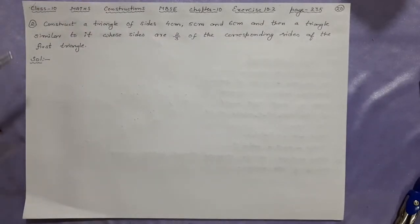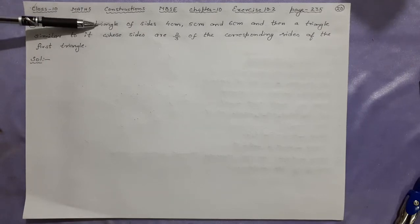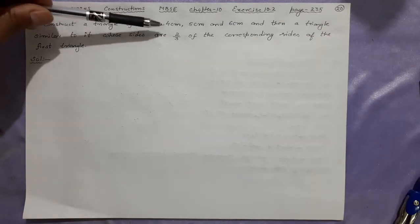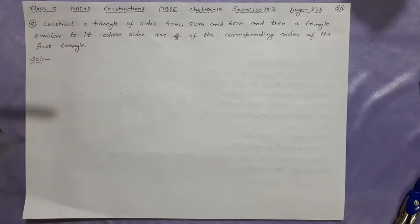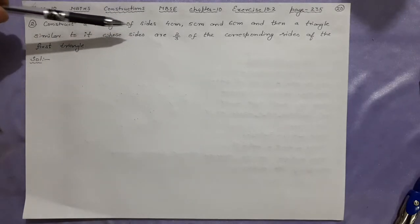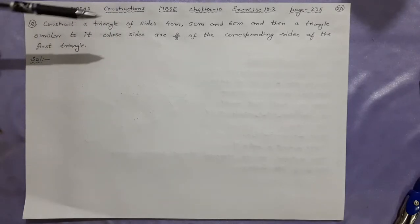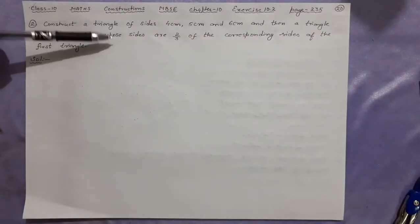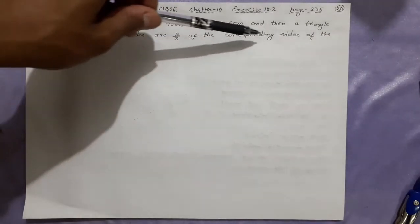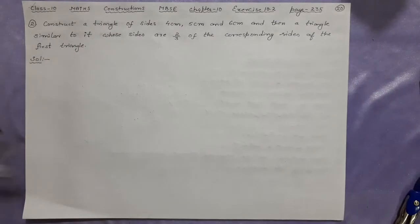Here we are going to do the second number question which says construct a triangle of sides 4 cm, 5 cm, 6 cm. There is no A, B, C given, so you can take any name like P, Q, R also. And then a triangle similar to it whose sides are two-thirds of the corresponding side of the first triangle.